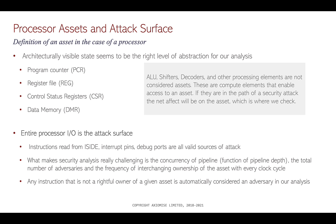The entire processor I/O is the attack surface. Instructions right from fetch — as soon as instructions start getting decoded and executed — could potentially be bad or good instructions, but nevertheless they are sources of attacks. What makes security analysis really challenging is the concurrency of the pipeline, a function of pipeline depth. The deeper the pipeline, the harder it is to understand whether we are secure. The total number of adversaries and the frequency of interchanging ownership of the asset with every clock cycle also adds to this complexity.